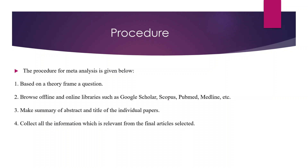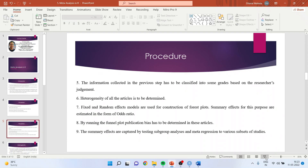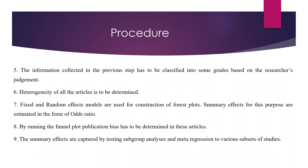The procedure for meta-analysis is based on theory and theoretical framework. Browse offline and online libraries such as Google Scholar, Scopus, PubMed, and Medline. Make a summary of the abstract and title of each individual paper. Collect all relevant information from the final selected articles. The information collected has to be classified into states based on researchers' judgment. Heterogeneity of all articles is to be determined. Fixed effect and random effect models are used for constructing forest plots. Summary effects are estimated in the form of odds ratio. By running the funnel plot, publication bias has to be determined. Summary effects are captured by testing subgroup analysis and meta-regression on various subsets of studies.